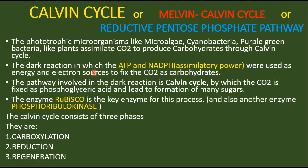The dark reaction requires two things: ATP and NADPH, which together we call assimilatory power. These are synthesized in the light phase. This assimilatory power is very important to fix carbon dioxide, and ATP and NADPH are used as energy as well as electron sources to fix carbon dioxide into carbohydrates.